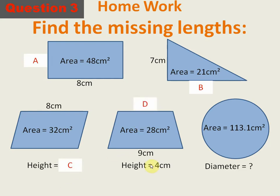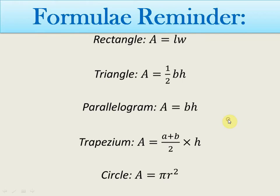Next is the trapezium where the area is given and you have to find the parallel side D. The first parallel side is 9 and the second is D. The last part of this question gives the area of a circle — you have to find the diameter. First calculate the radius, then multiply by 2 to get the diameter.